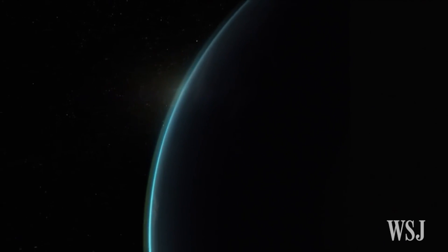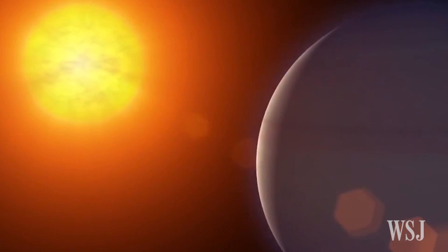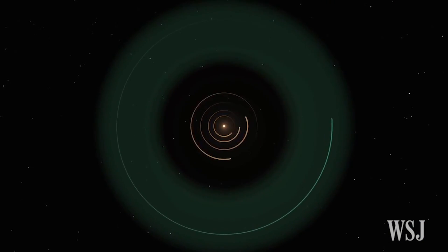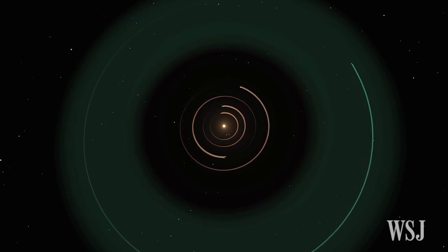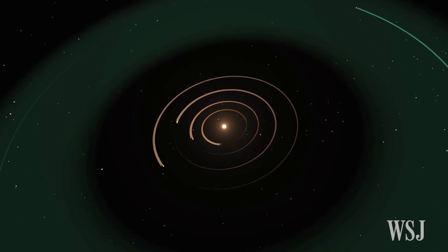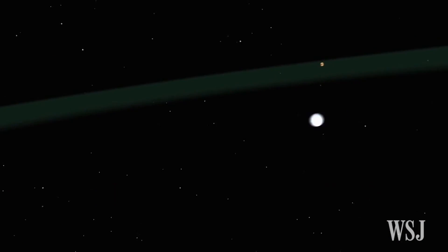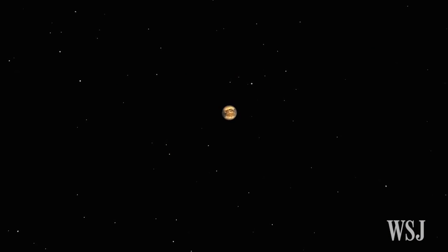Nine of the newly verified exoplanets, as they're called, could be hospitable for life, the NASA scientists say. They orbit their stars in the so-called Goldilocks Zone, where the conditions are just right for liquid water to exist on the planet's surface.